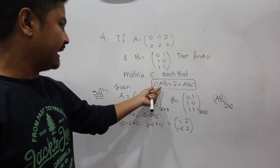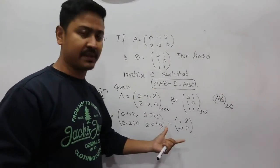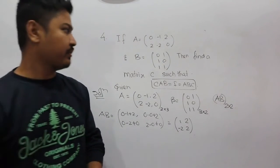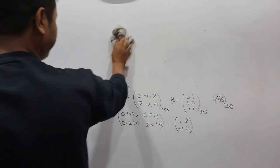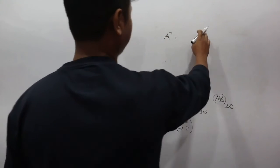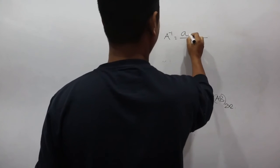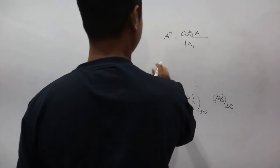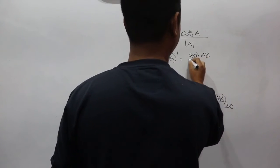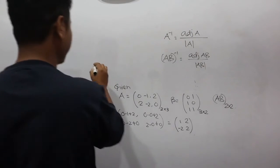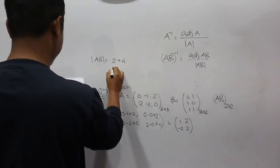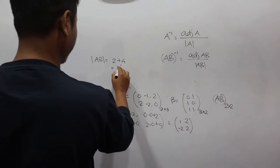So AB matrix equals [1, 2; -2, 2]. We need to find C, which is the inverse of this matrix. We compute the inverse of AB. First compute the determinant of AB: determinant equals 2 times 1 minus (-2) times 2 equals 2 plus 4 equals 6. So determinant of AB equals 6.